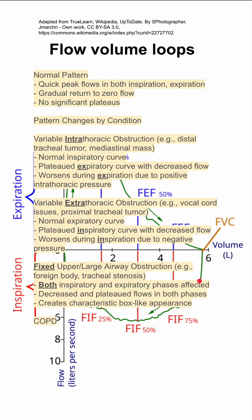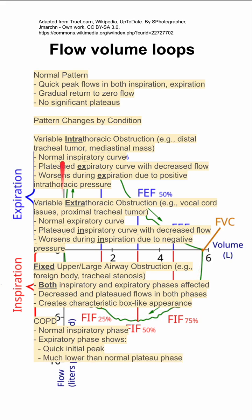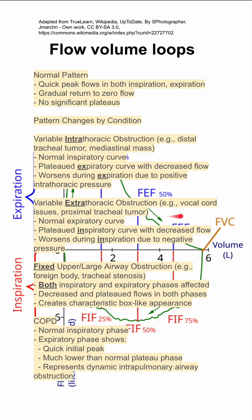Lastly, there's a characteristic flow volume loop for COPD. In COPD, you'll have a normal inspiratory phase, and your expiratory phase will have a quick initial peak as normal, but a much lower than normal plateau phase. So instead of going down gradually like the normal pattern, you'll have a lower than normal plateau phase on expiration. This represents the dynamic intrapulmonary airway obstruction in COPD.